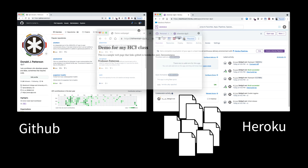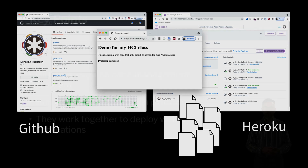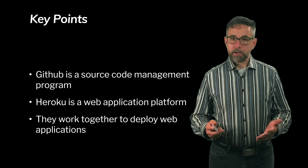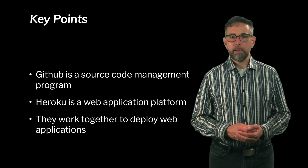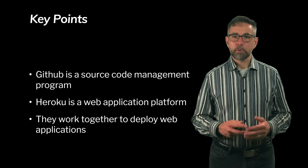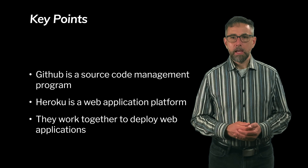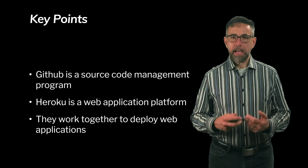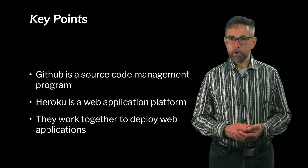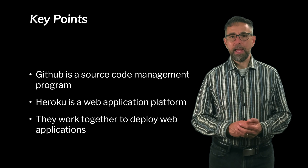GitHub and Heroku work great in this way. It launches a program, and here's an example of what those files might generate — a demo for my HCI class from a URL served from Heroku. The key points are that GitHub is a source code management program and Heroku is a web application platform, and they work together to create a very nice pipeline for web application development. I hope this has given you a little background for the exercise I'm going to ask my students to do next, which is to create a very simple website that connects GitHub and Heroku together.